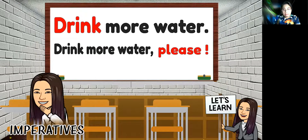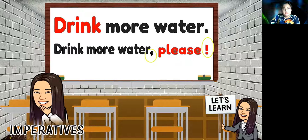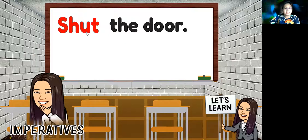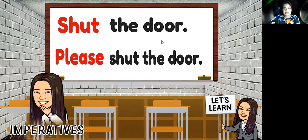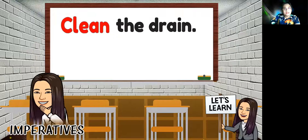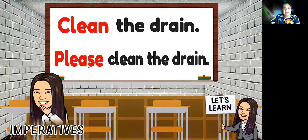You can see the difference here — anda boleh nampak perbezaannya. The sentence has a comma and an exclamation mark. Bila please diletak di belakang, dia ada tanda koma dan tanda seruan. Next: 'Shut the door' — tutup pintu. Or you can say 'Please shut the door.' Next: 'Clean the drain' — clean ialah kata kerja atau verb. 'Clean the drain,' or 'Please clean the drain.'